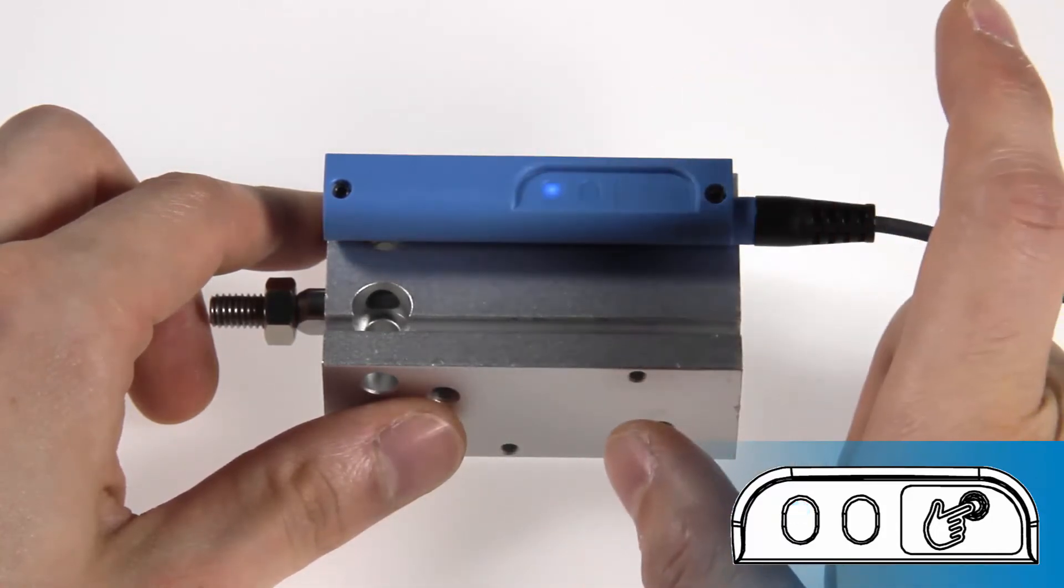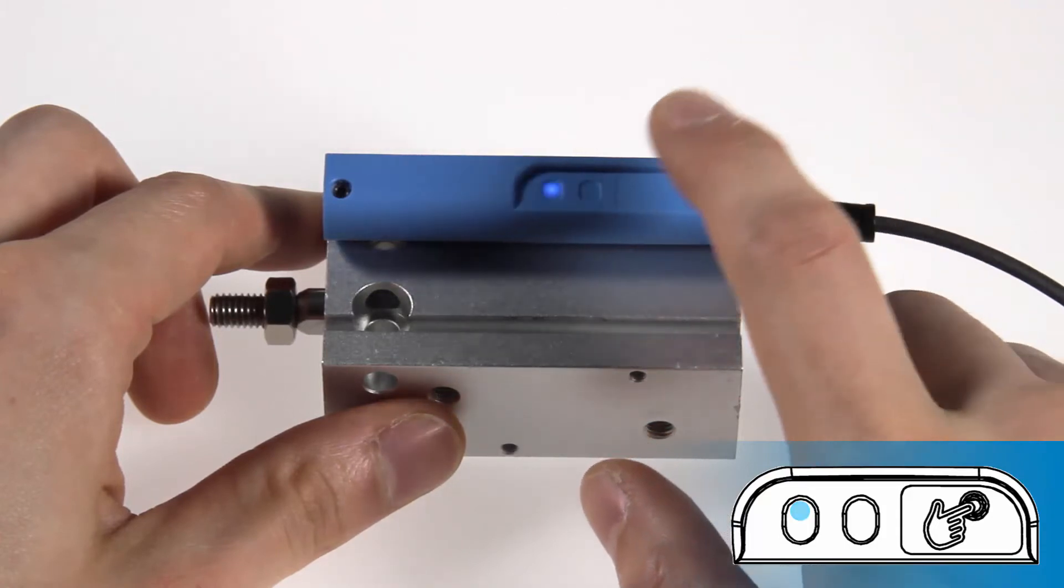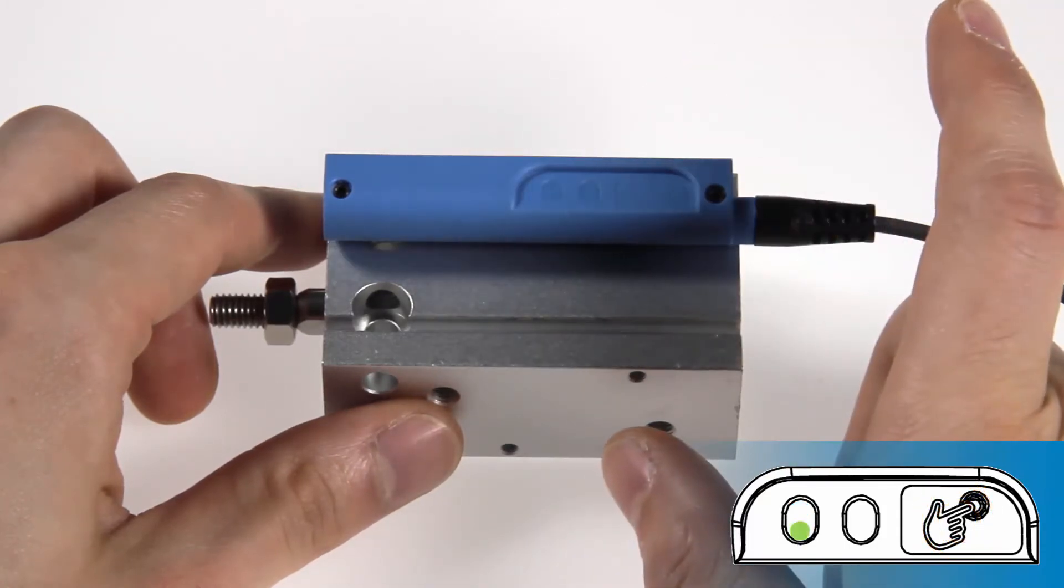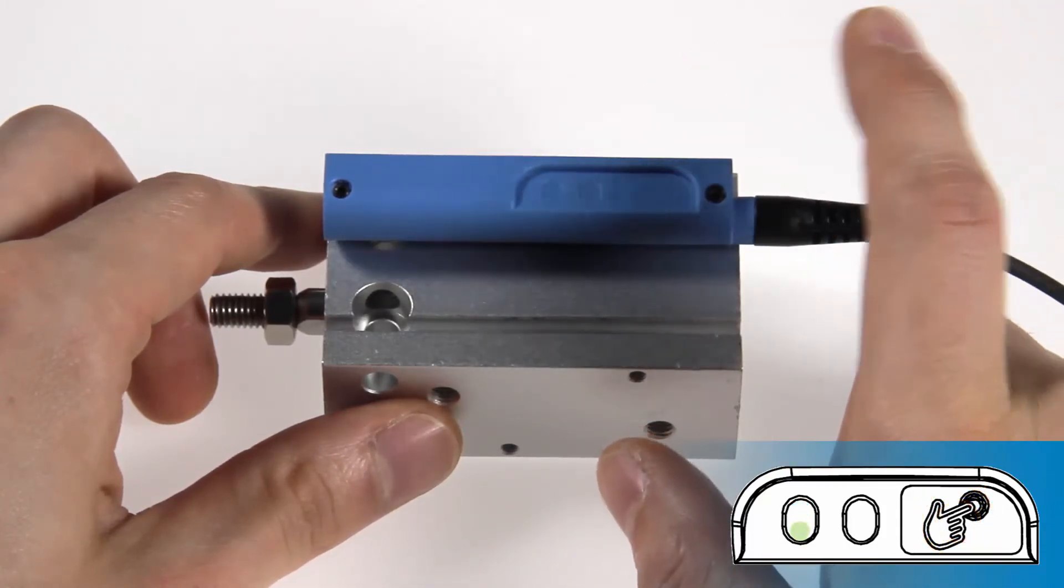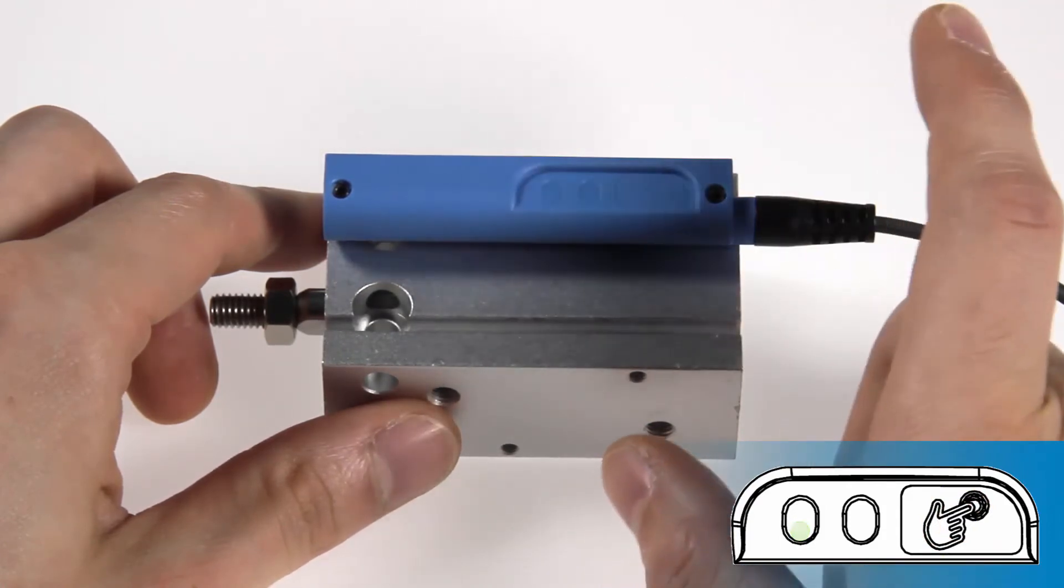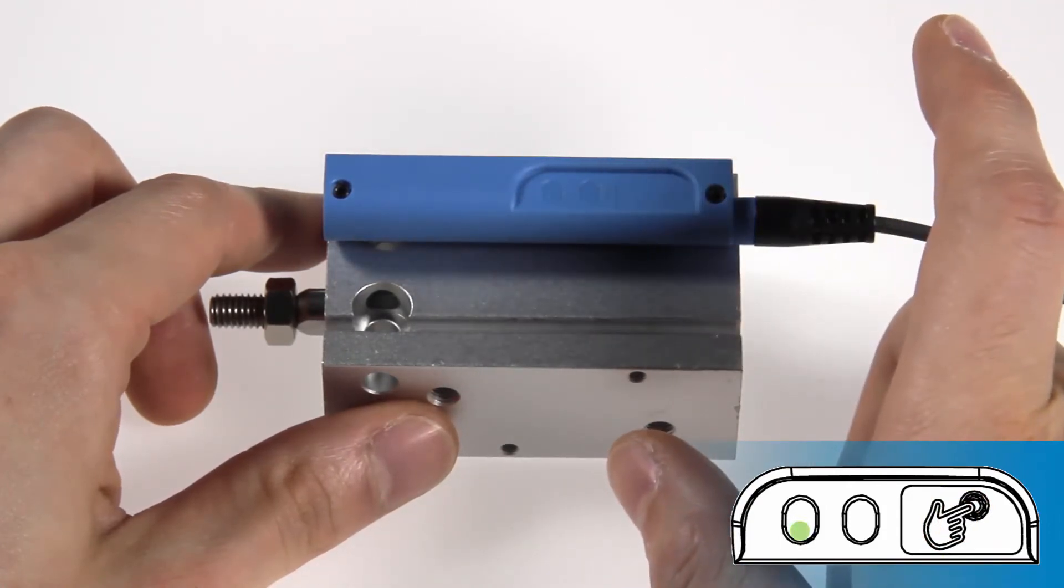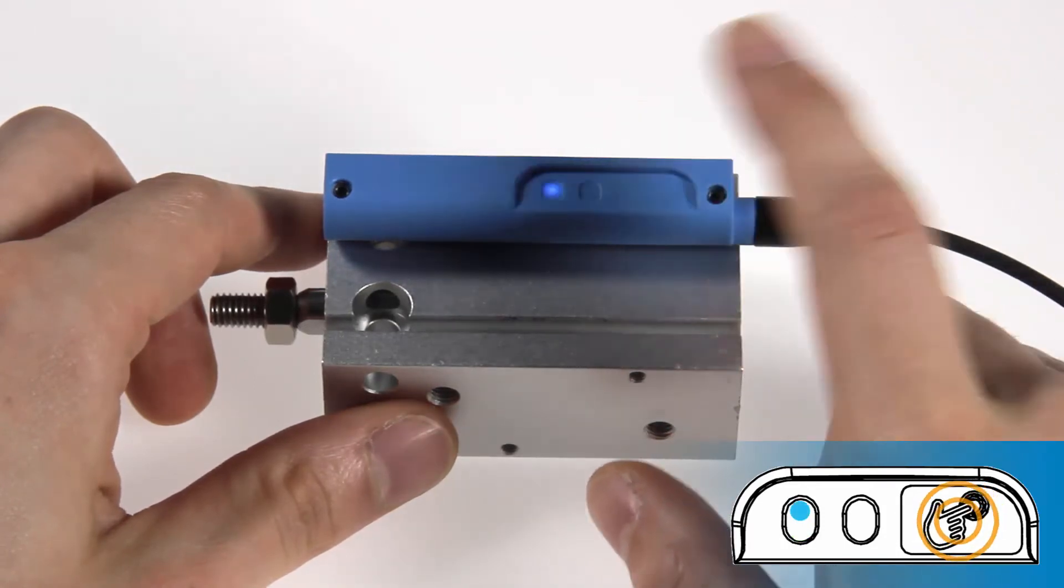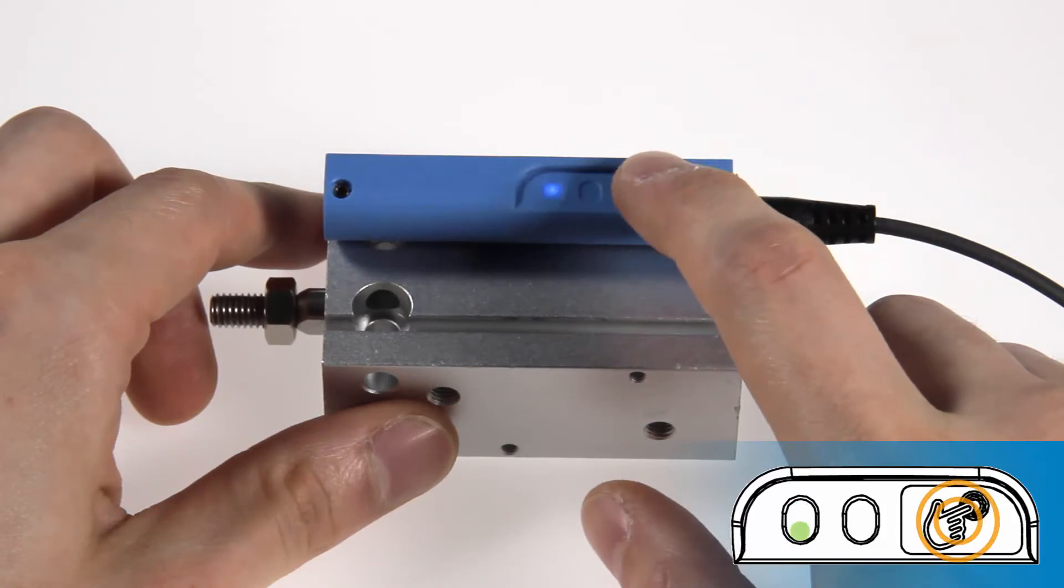In order to change the output to voltage, press the keypad again and the LED changes from blue to green. The green LED means that the voltage output is active now and the sensor provides a 0 to 10 volt signal in the set range. By pushing the keypad, one can switch between the current and the voltage output.